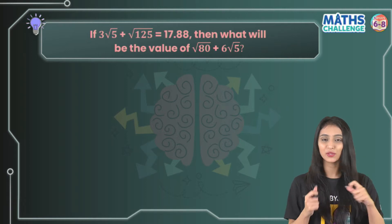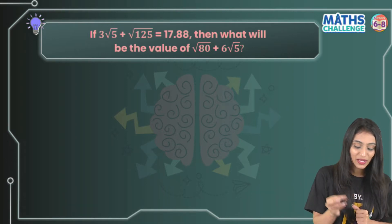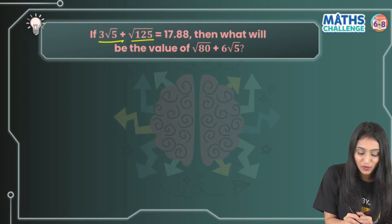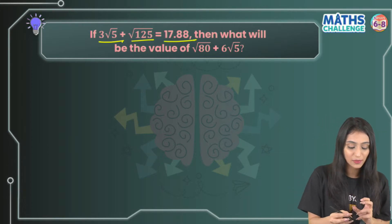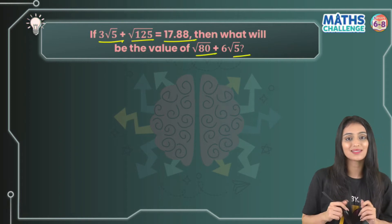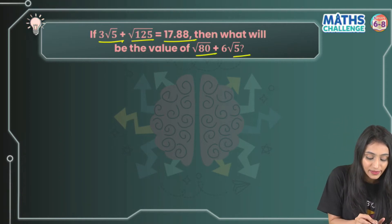We'll use basic concepts we've already learned. We're given that 3√5 + √125 = 17.88. We have to build up some relationship so that we get √80 + 6√5. Let me start by rewriting this equation.